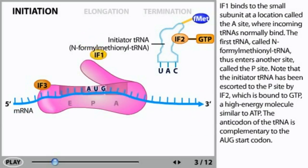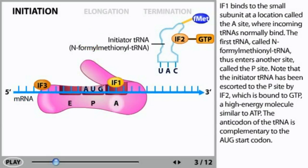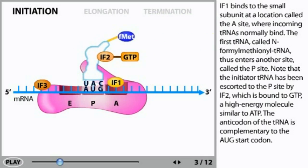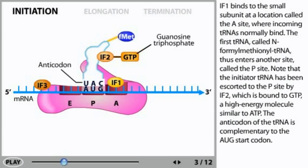IF1 binds to the small subunit at a location called the A site, where incoming tRNAs normally bind. The first tRNA, called N-formylmethionyl tRNA, thus enters another site called the P site. Note that the initiator tRNA has been escorted to the P site by IF2, which is bound to GTP, a high energy molecule similar to ATP. The anticodon of the tRNA is complementary to the AUG start codon.